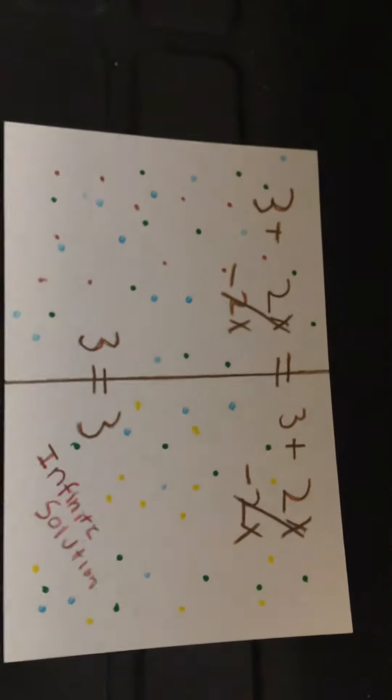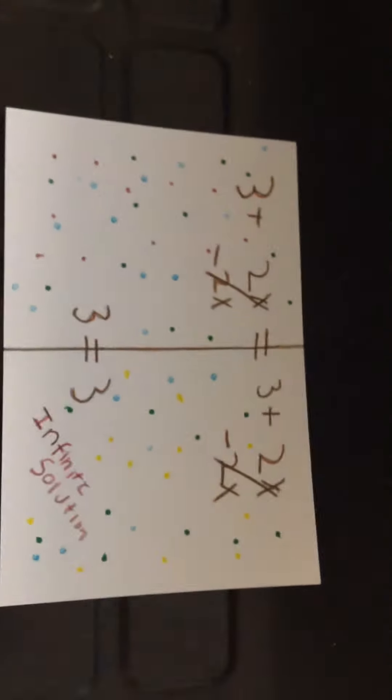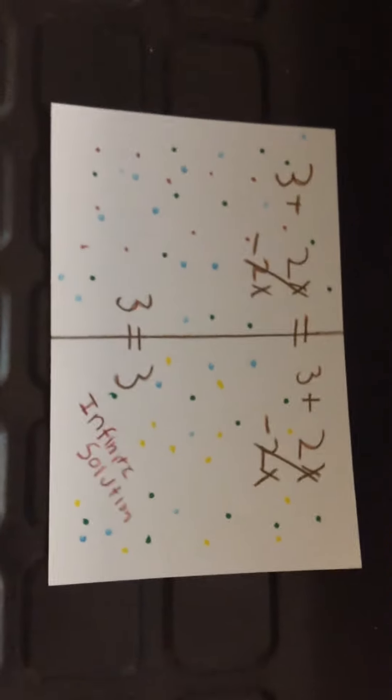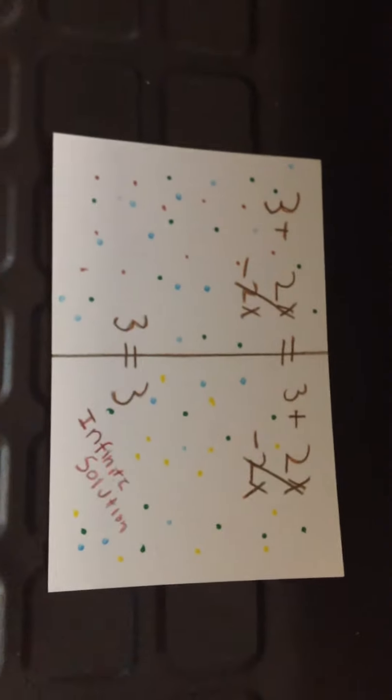Three plus two x equals three plus two x. And then you would subtract two x, and it would be three equals three. And when the numbers equal the same thing, that's when you know it's infinite solutions.